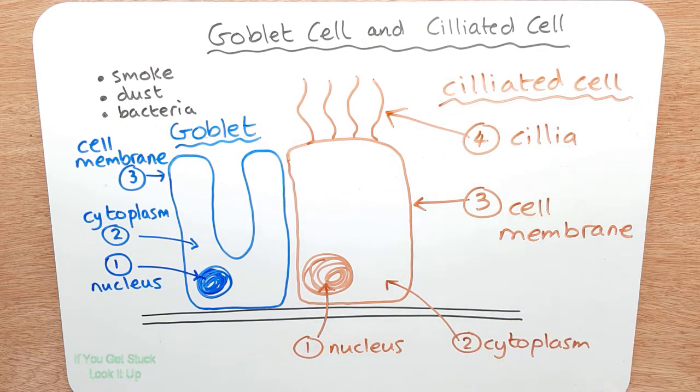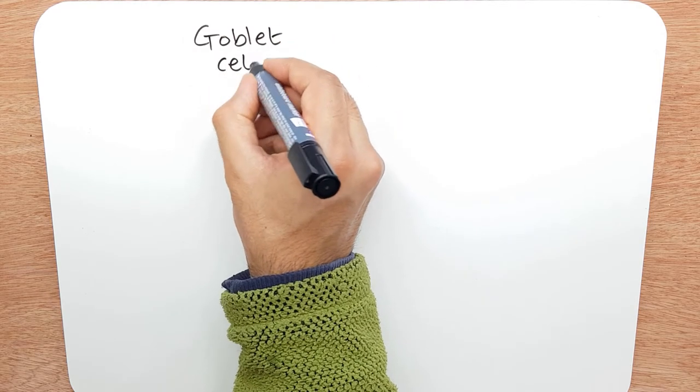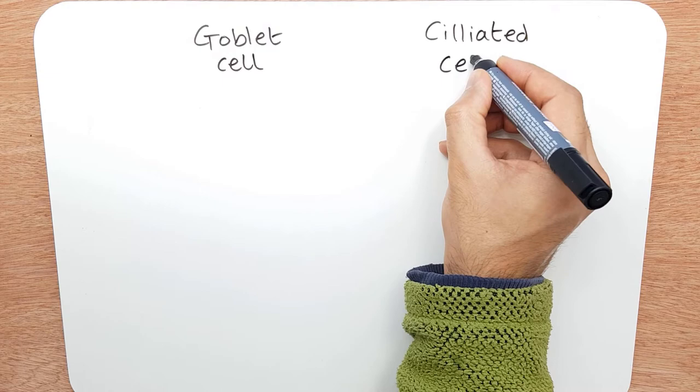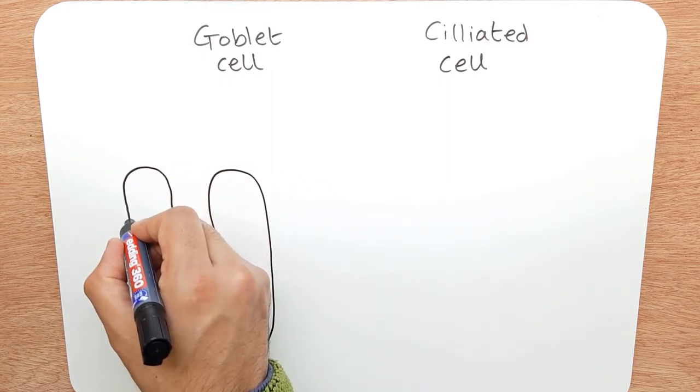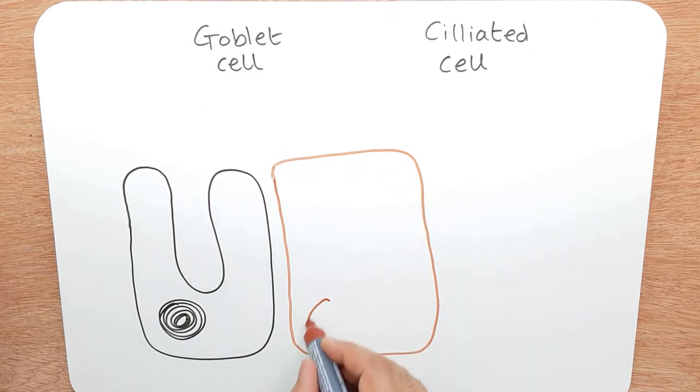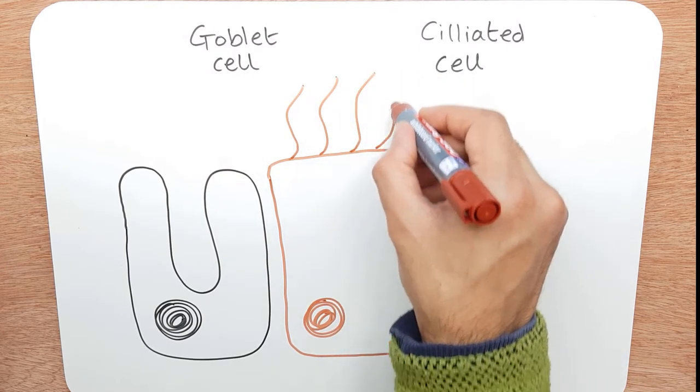And sometimes they'll call it the columnar ciliated cell because it's a long, thin structure like a column. So let me draw those again quickly. You've got the goblet cell and you've got the ciliated cell. Right, so let's draw this. There's your cell membrane. There's your nucleus. And you have your cytoplasm in the middle. And then you have your ciliated cell. There's your nucleus. You've got thread-like structures, your cilia.